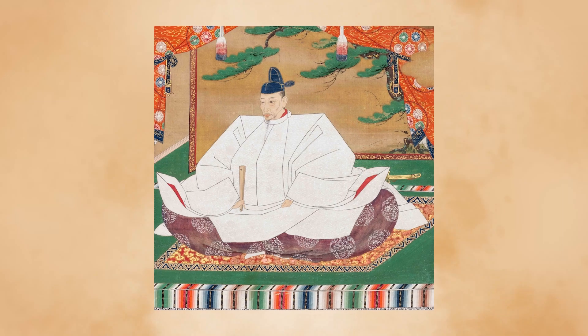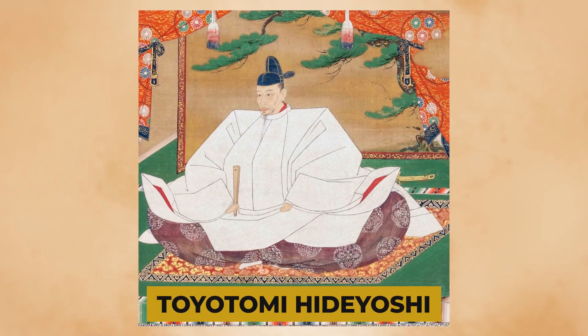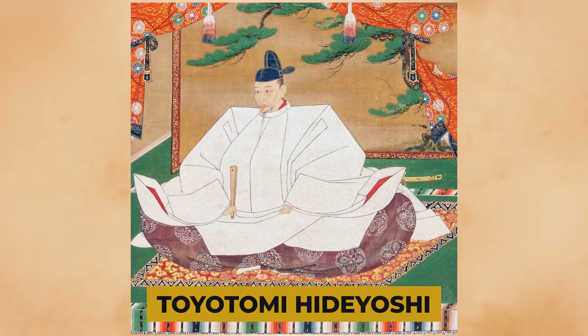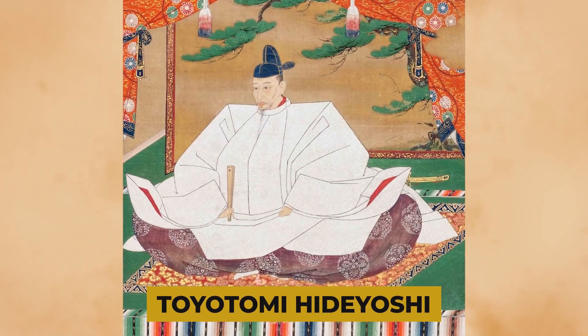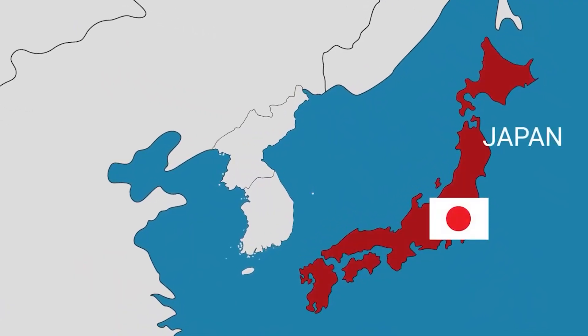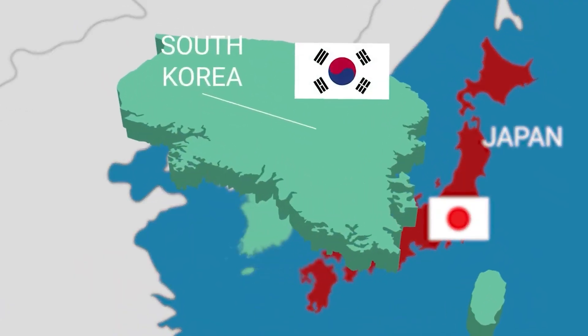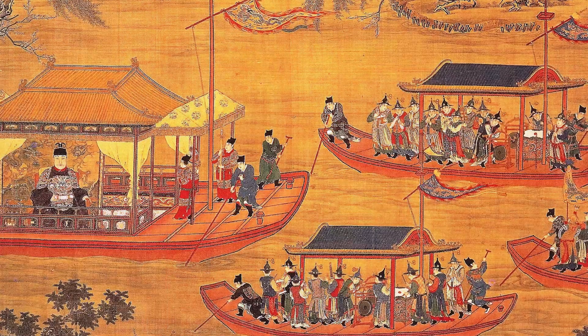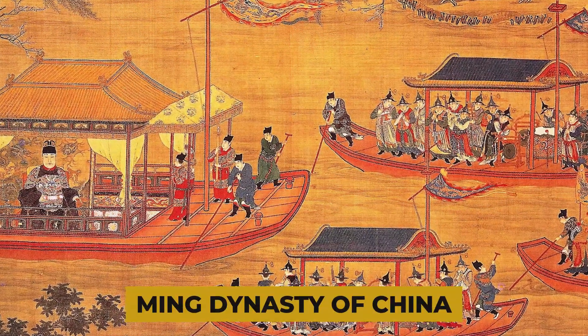The war was initiated by Toyotomi Hideyoshi, the de facto ruler of Japan, who had ambitions to conquer China and become the supreme leader of Asia. To achieve his goal, he needed to secure a base in Korea, which was a tributary state of the Ming Dynasty of China.